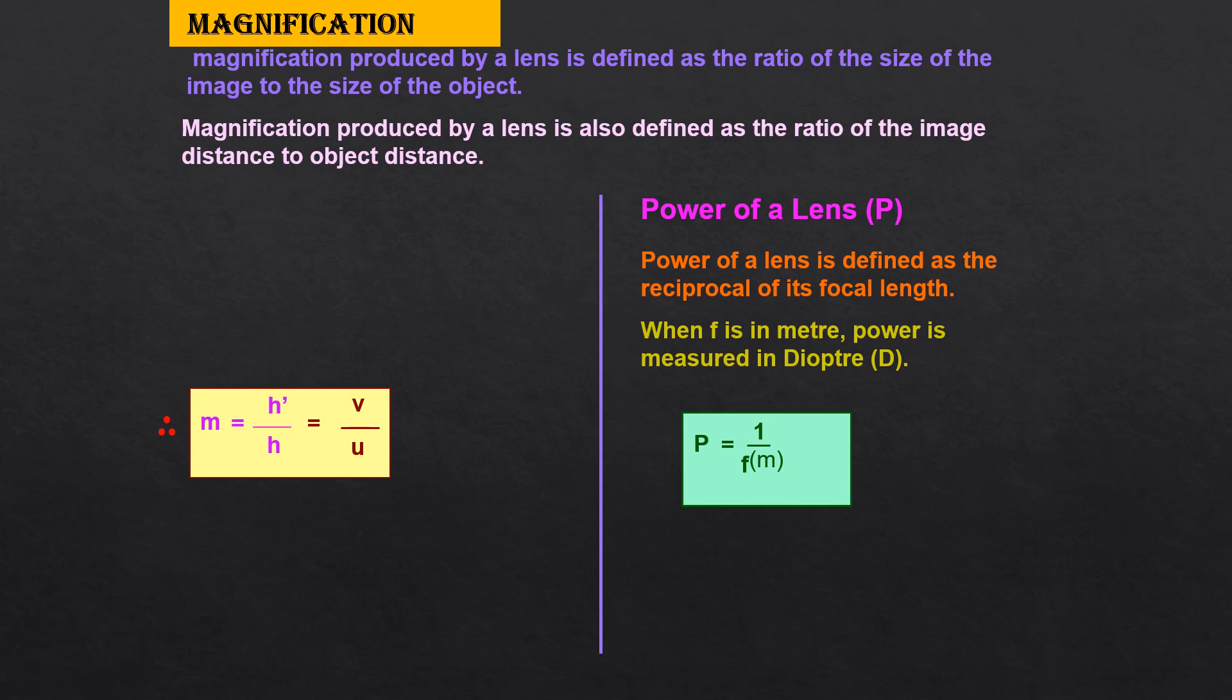Because if the focal length is given in centimeter, then how do we calculate power for the lens? You have to take it as P equals 100 by F in centimeters, which will give you the power in diopter. This is the conversion of meters into centimeters. So this is the formula. Please learn all the formulas thoroughly.